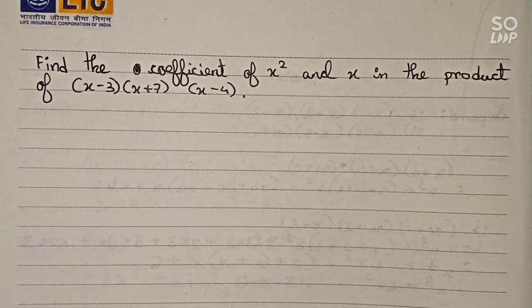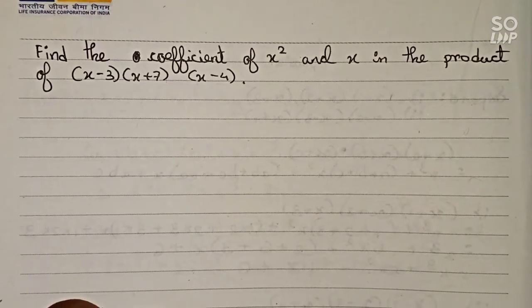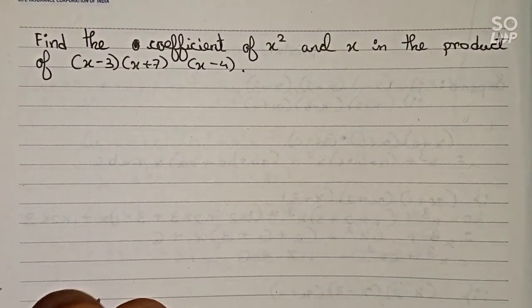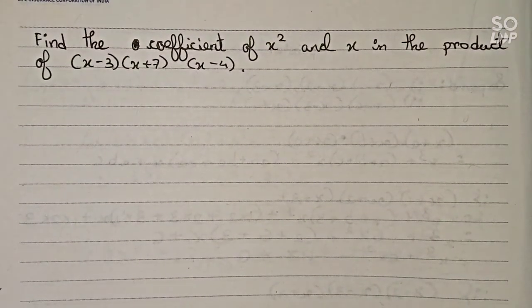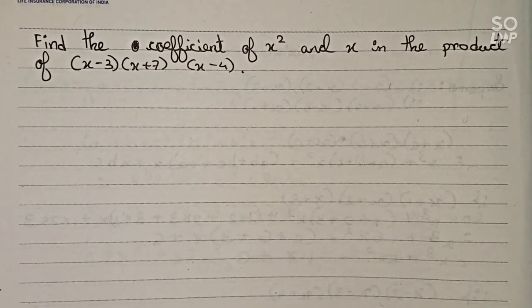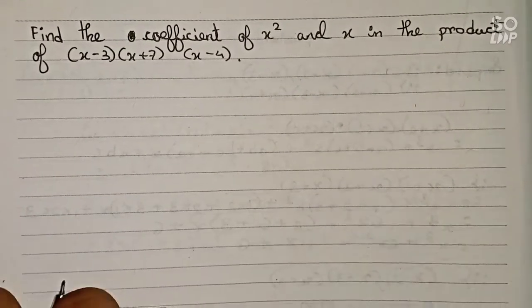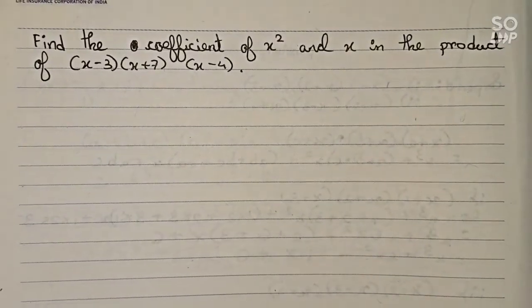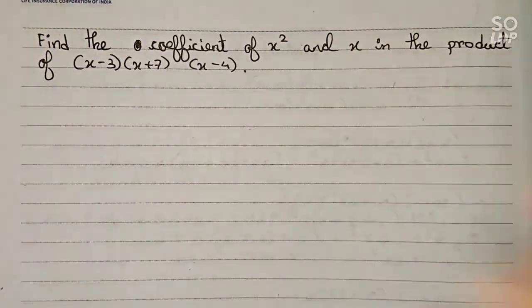Hello guys, welcome to this video. In this video, our question is: find the coefficient of x squared and x in the product of (x minus 3) multiplied by (x plus 7) multiplied by (x minus 4).